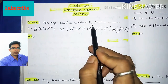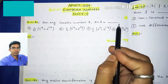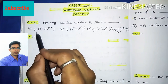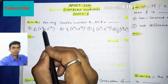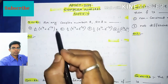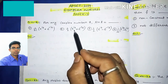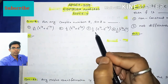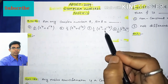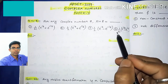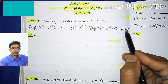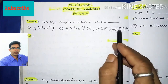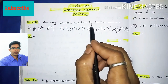Question 21: For any complex number z, sin(z) equals what? The four options are: option 1: 1/(2i) · (e^iz + e^(-iz)); option 2: 1/2 · (e^iz + e^(-iz)); option 3: 1/2 · (e^iz - e^(-iz)); option 4: 1/(2i) · (e^iz - e^(-iz)). We have to find the value of sin(z).